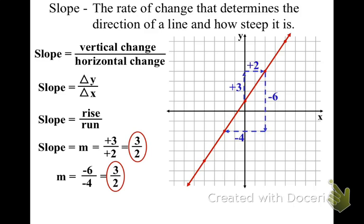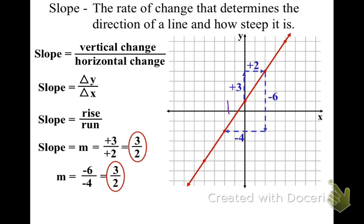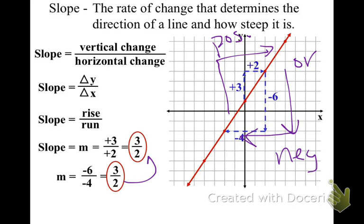You might say those are two different slopes — why do we get two different values? Well, don't forget we can simplify. Double negatives become positive, and 6 and 4 have a common factor of 2. Dividing both by 2, we still get 3 halves as our answer. All these points are on the same line, so they have the same slope.